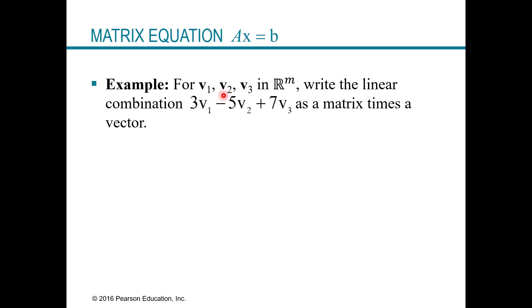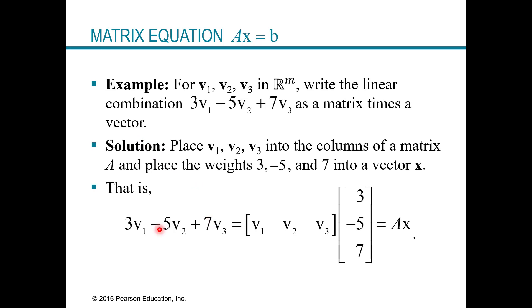For example, let's say we have V1, V2, and V3, which make up a matrix A, and we want to write the linear combination 3V1 minus 5V2 plus 7V3 as a matrix times a vector. We take the columns V1, V2, V3 to form matrix A, and then X is the vector with entries 3, -5, and 7 — the coefficients on V1, V2, and V3. Putting it back together gives 3 times V1 minus 5 times V2 plus 7 times V3, and we call that A times X.